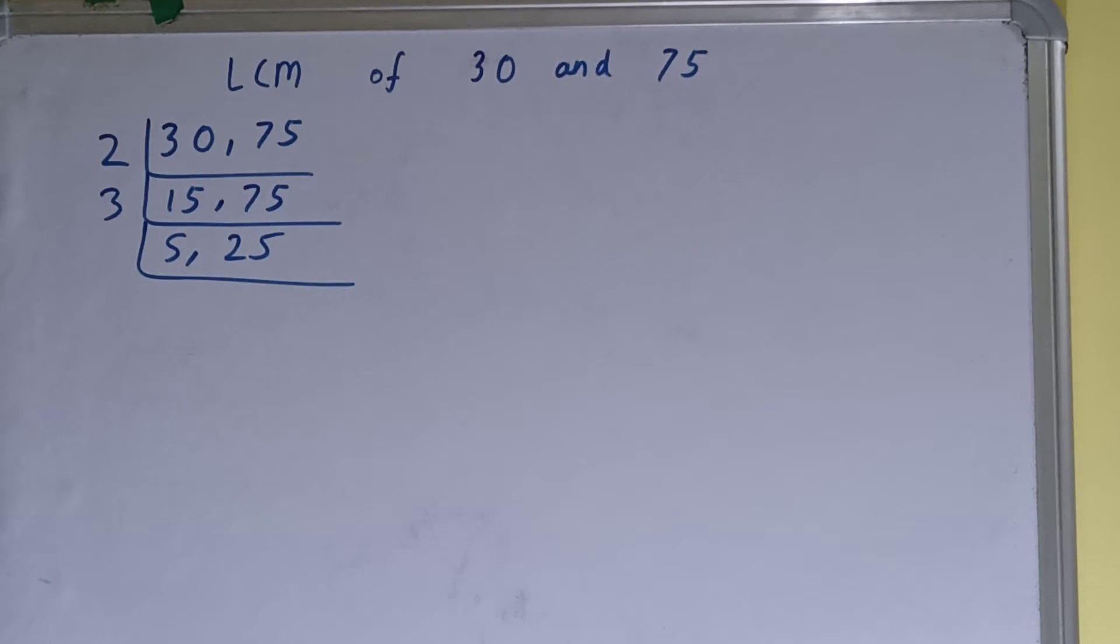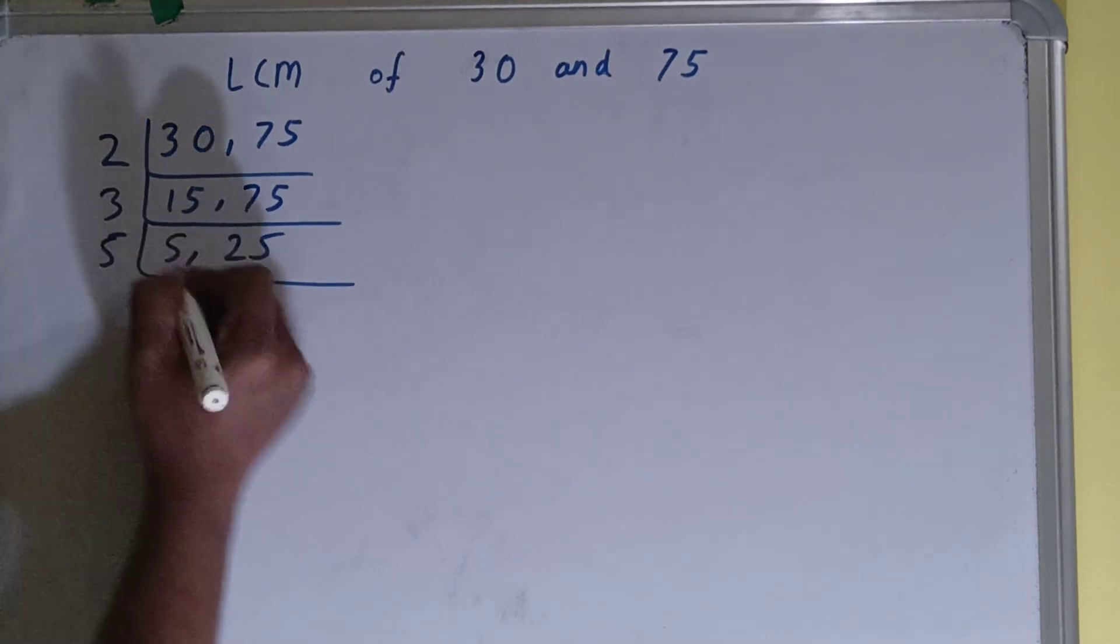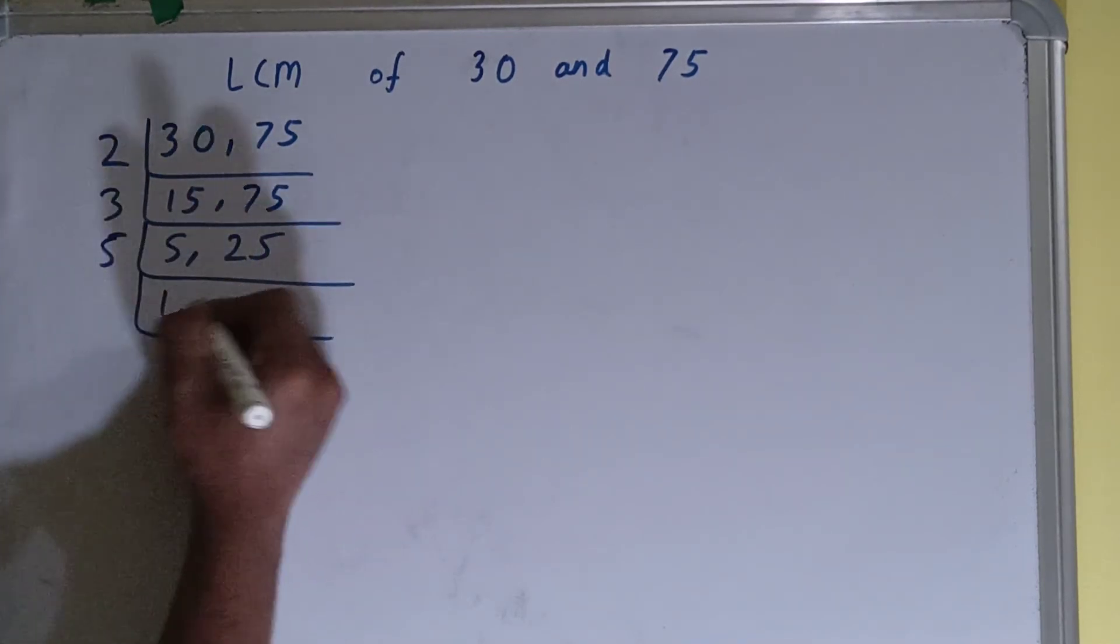Both the numbers can be divided by 5, so we'll divide. We'll have this as 1 and this as 5.